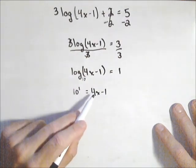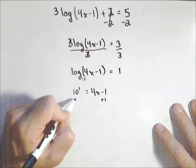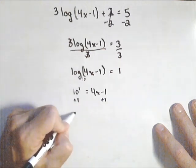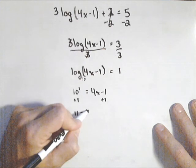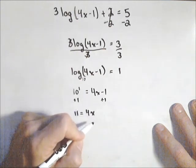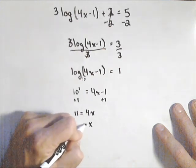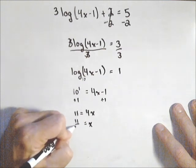10 to the first is just 10, so we'll add one to both sides. So we get 11 equals four x or that x equals 11 over four.